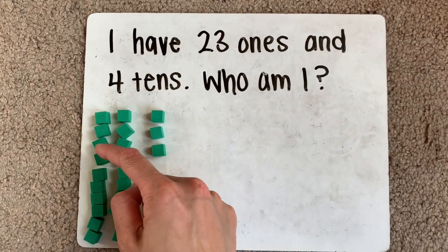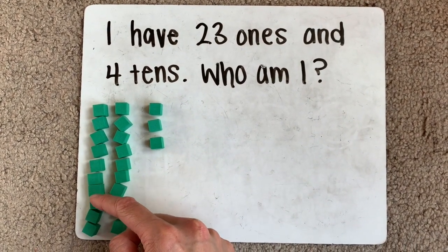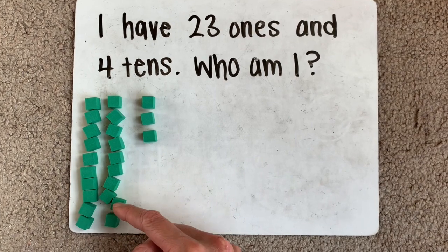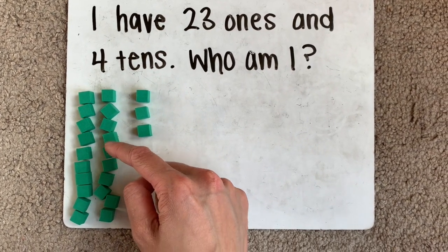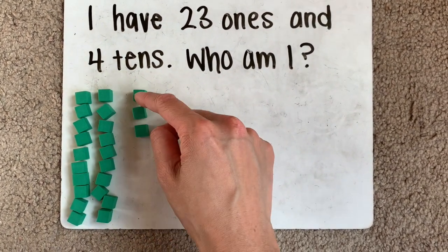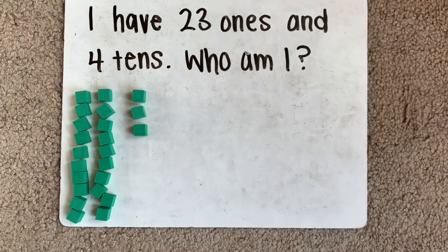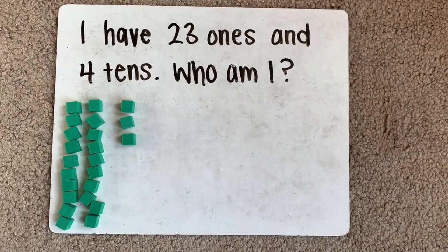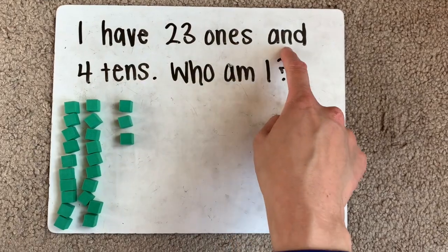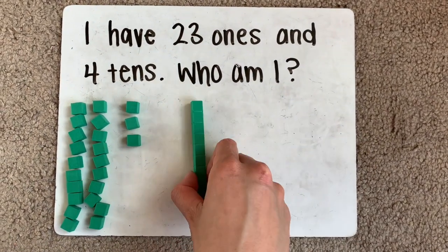1, 2, 3, 4, 5, 6, 7, 8, 9, 10, 11, 12, 13, 14, 15, 16, 17, 18, 19, 20, 21, 22, 23. Now we still are not done. So it has 23 ones and four tens. So let's put our four tens.